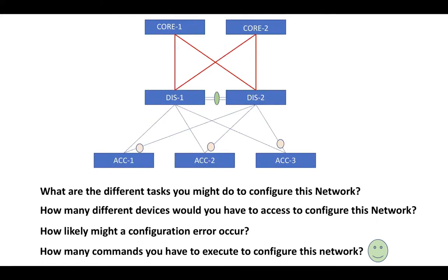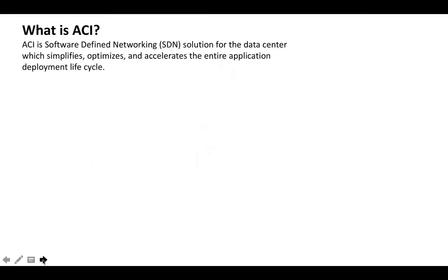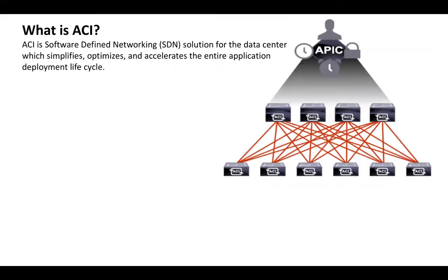Time to start with ACI. First question: what is ACI? ACI is an SDN solution — a software-defined networking solution for the data center — which simplifies, optimizes, and accelerates the entire application deployment process. We will have a look at how ACI optimizes and simplifies the process in subsequent sessions.